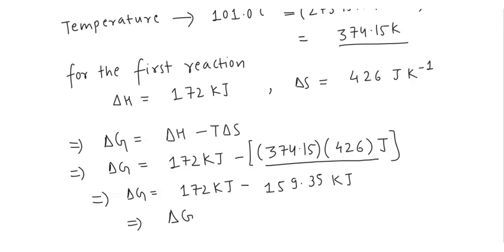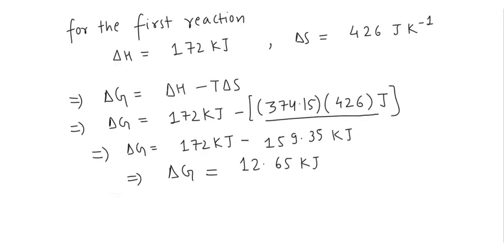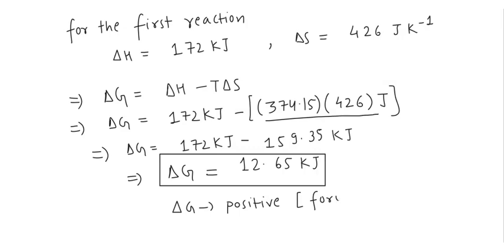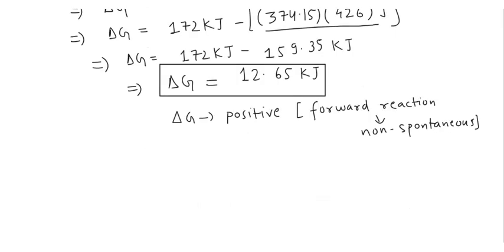Solving this we will get the value of ΔG as 12.65 kJ. Here this is the required answer for this part and we can see that ΔG is positive which means the forward reaction which is given to us will be non-spontaneous.